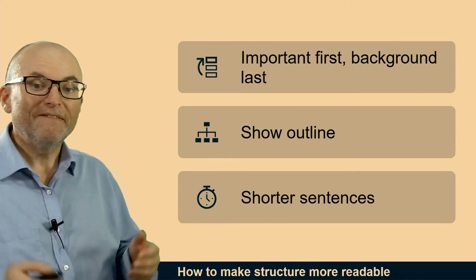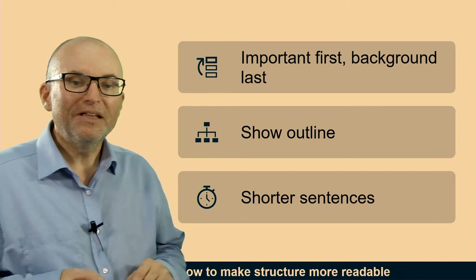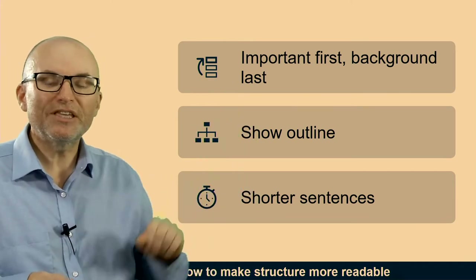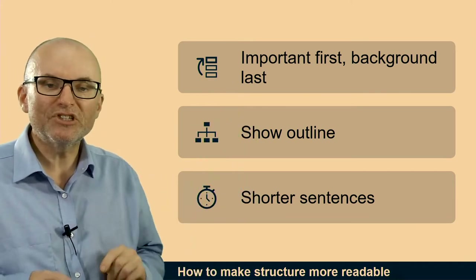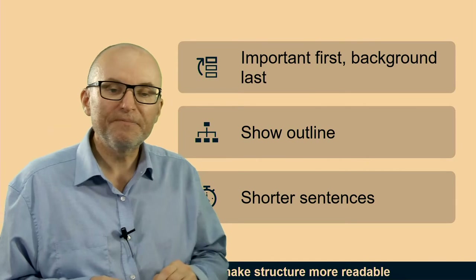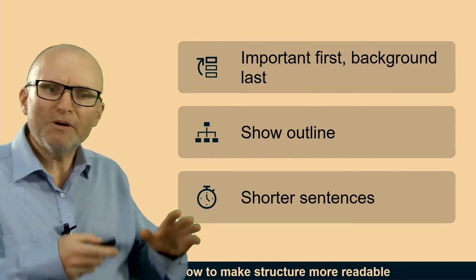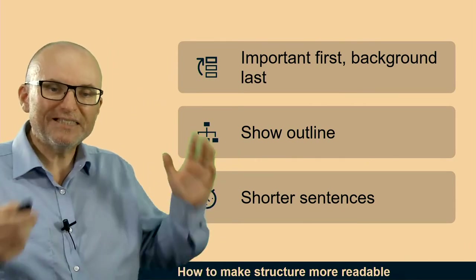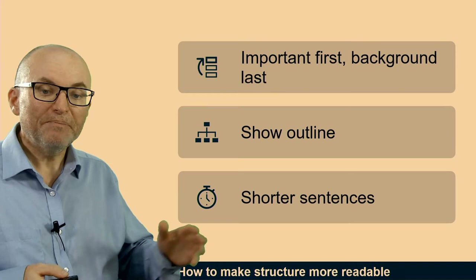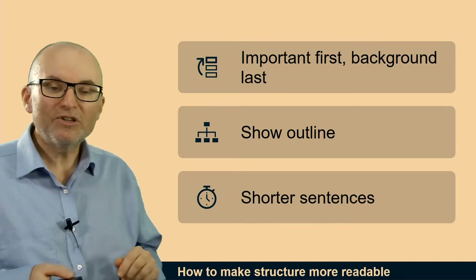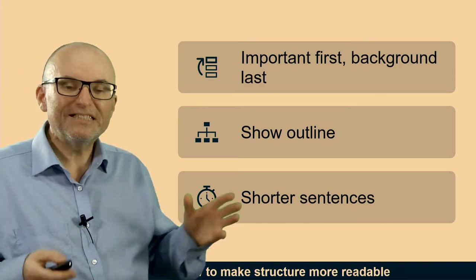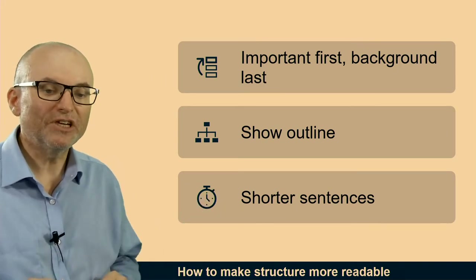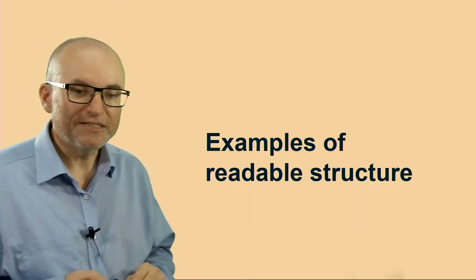The very simple thing you can do first is make sure that the important information is always first and the background is last. You should also always show the outline of the text so that people get a sense of what the overall structure is. And of course, the text itself can be structured much more simply just by using shorter sentences.